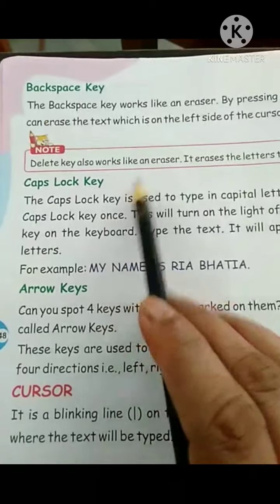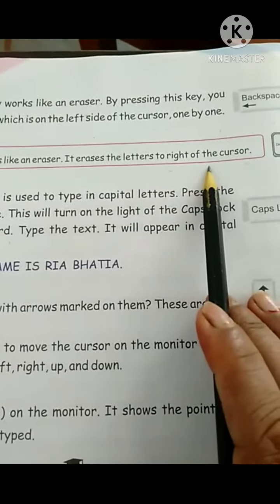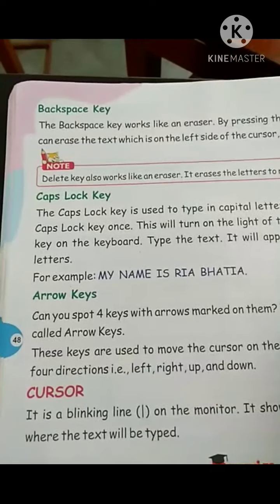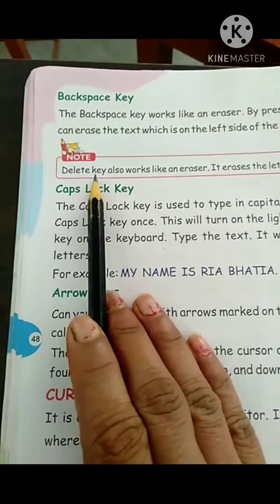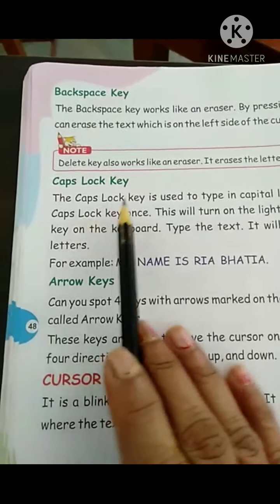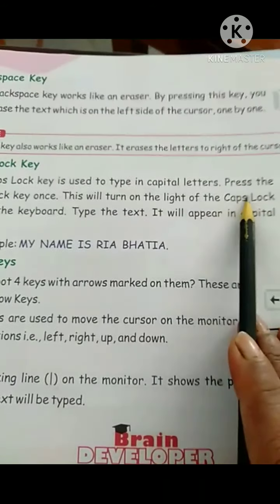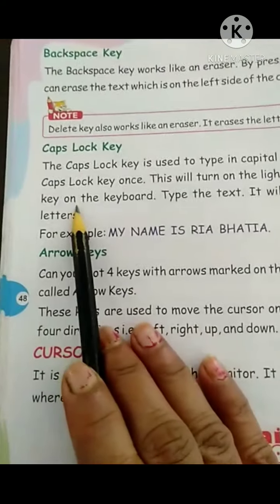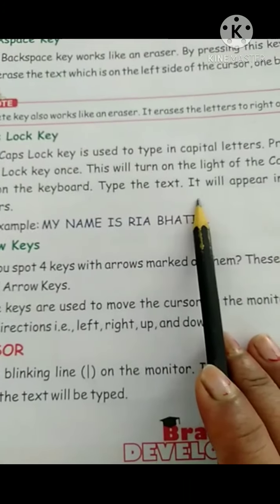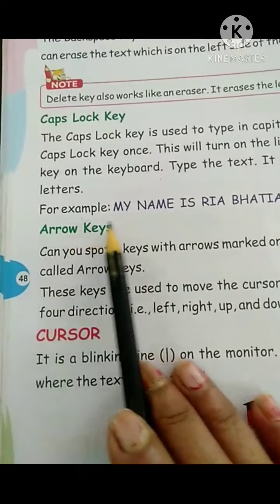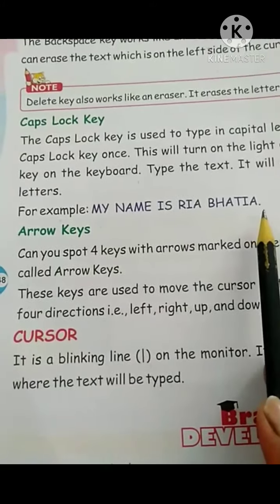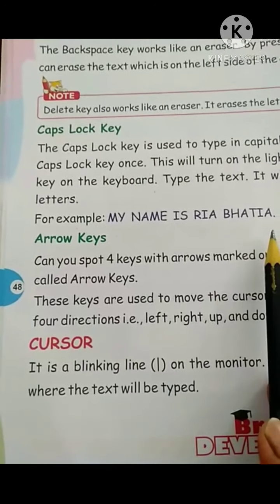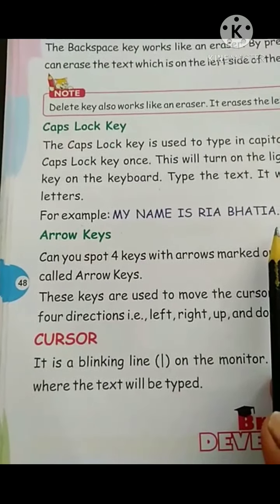The delete key also works like an eraser — it erases letters to the right of the cursor. There are two eraser keys on the keyboard: the backspace key and the delete key. The next key is the caps lock key. The caps lock key is used to type in capital letters. Press the caps lock key once — this will turn on the light on the keyboard. Type text and it will appear in capital letters, for example: MY NAME IS RIYA BHATIA.